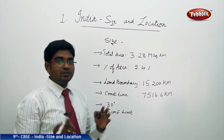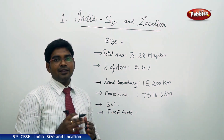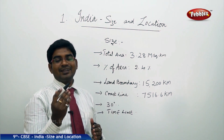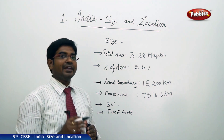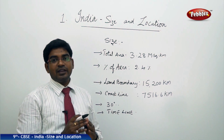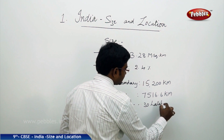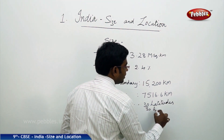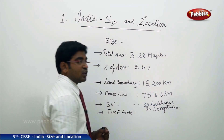When we observe the location of India, India's latitudinal extent is from 8 degrees to 37 degrees, while the longitudinal extent is from 68 degrees to 97 degrees. This clearly reveals that nearly 30 latitudes and 30 longitudes pass through India.